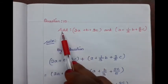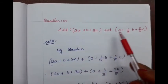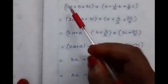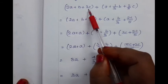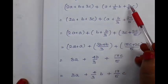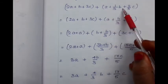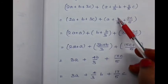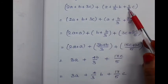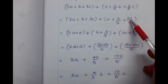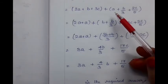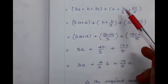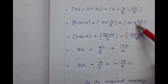Next, question number 10: Add 2A plus B plus 3C and A plus 1/3 B plus 2/5 C. We write: 2A plus B plus 3C plus A plus 1/3 B plus 2/5 C. In the second expression, 1/3 B means B divided by 3, and 2/5 C means 2C divided by 5. After simplifying, we segregate the like terms: 2A plus A, then B plus B/3, then 3C plus 2C/5.